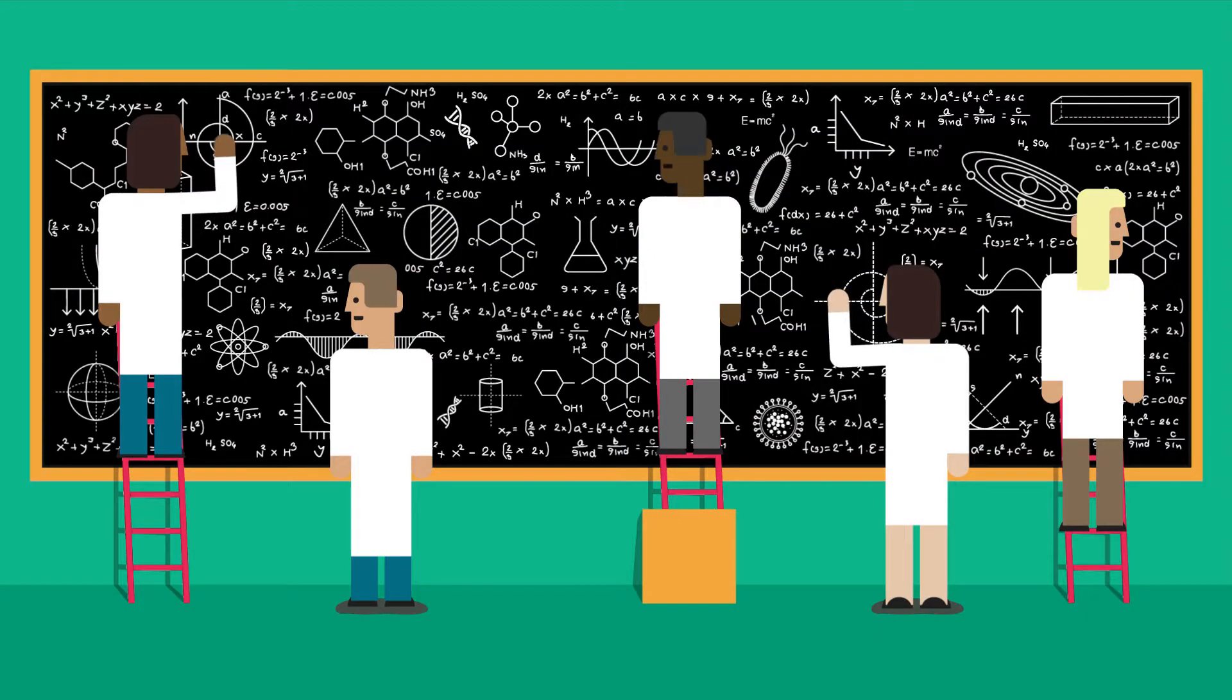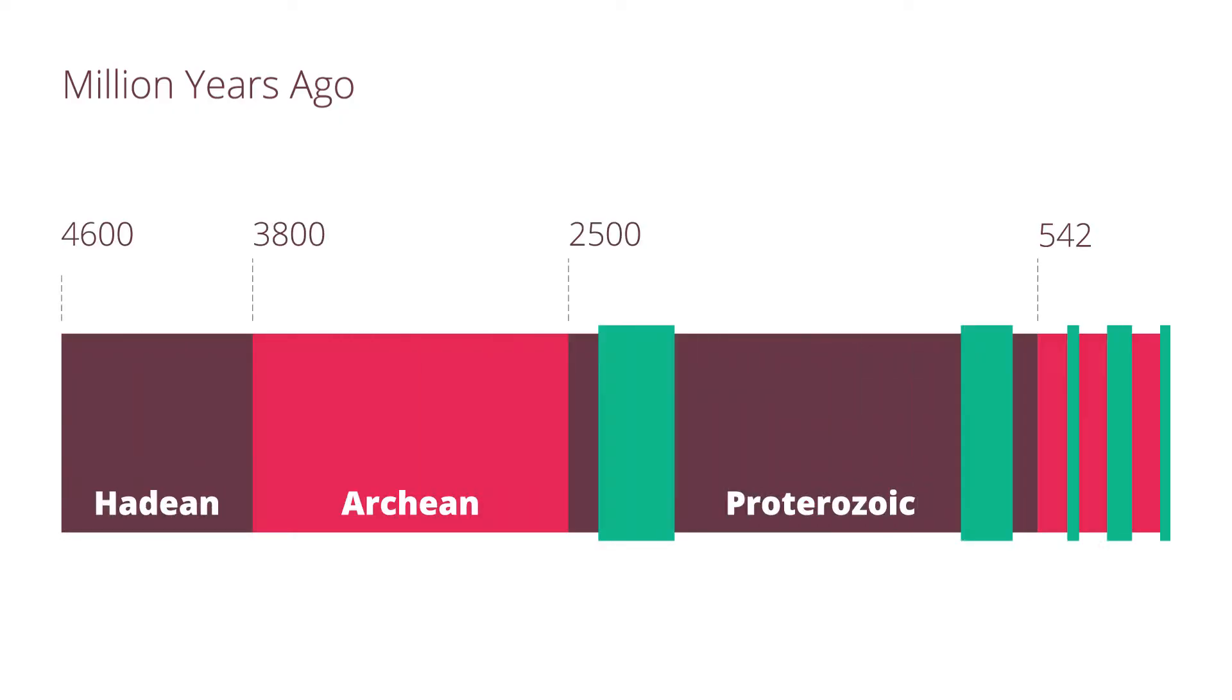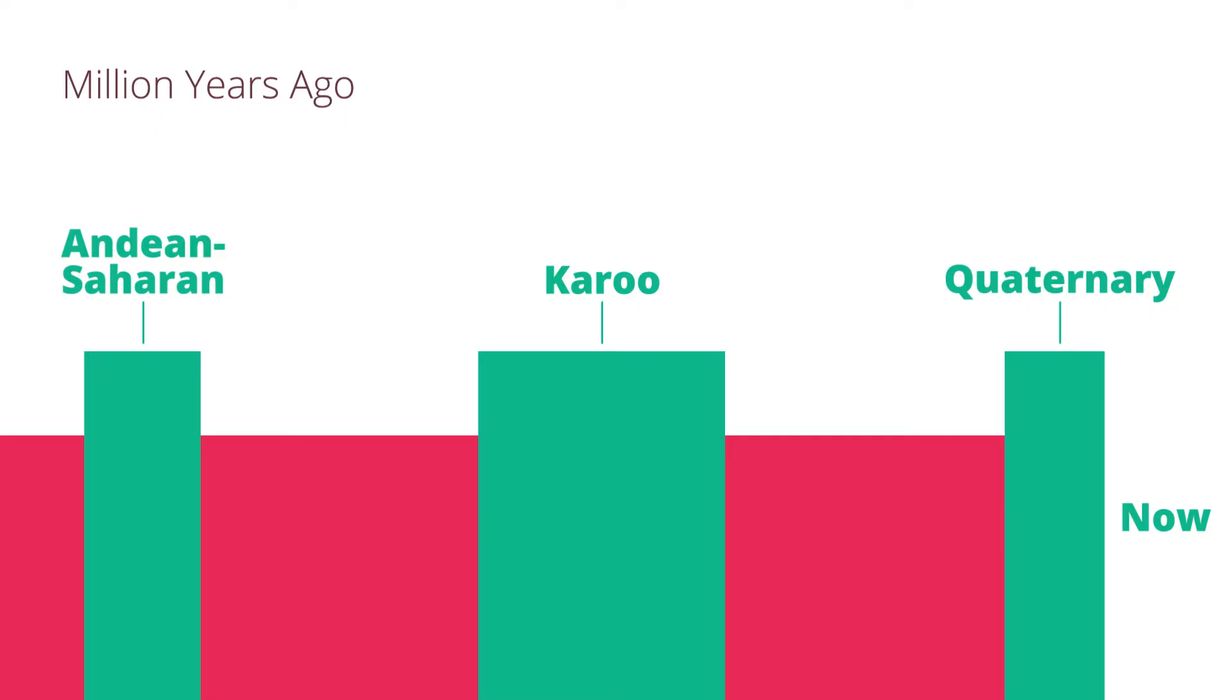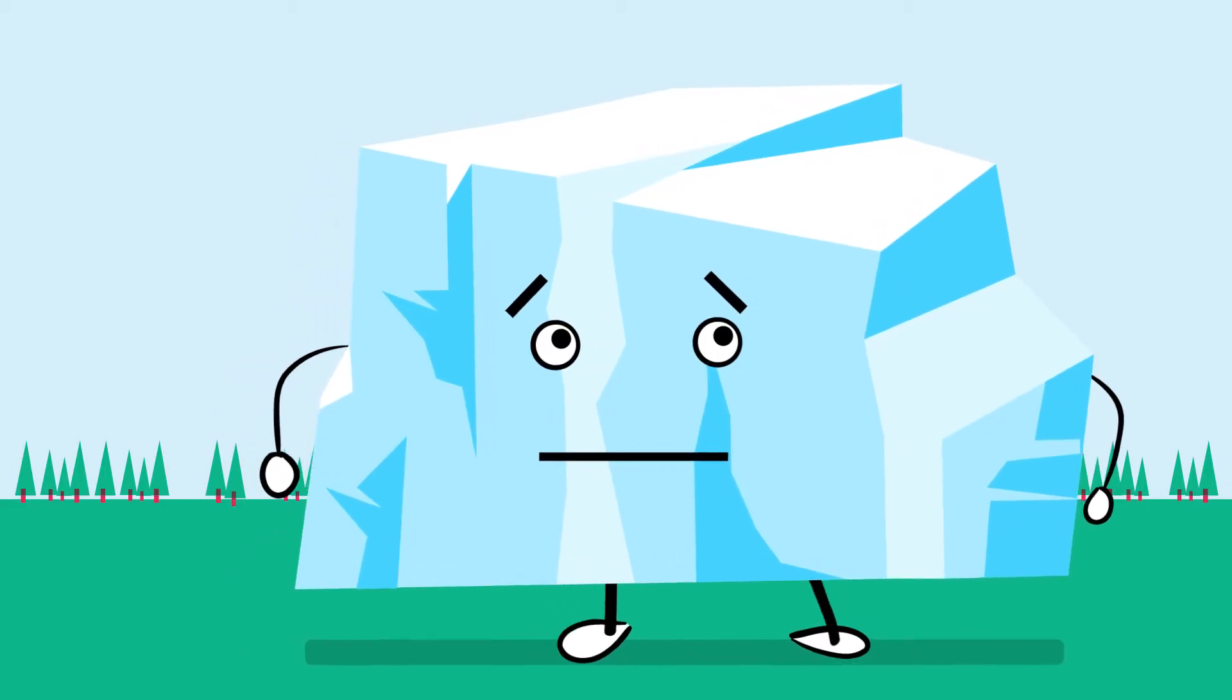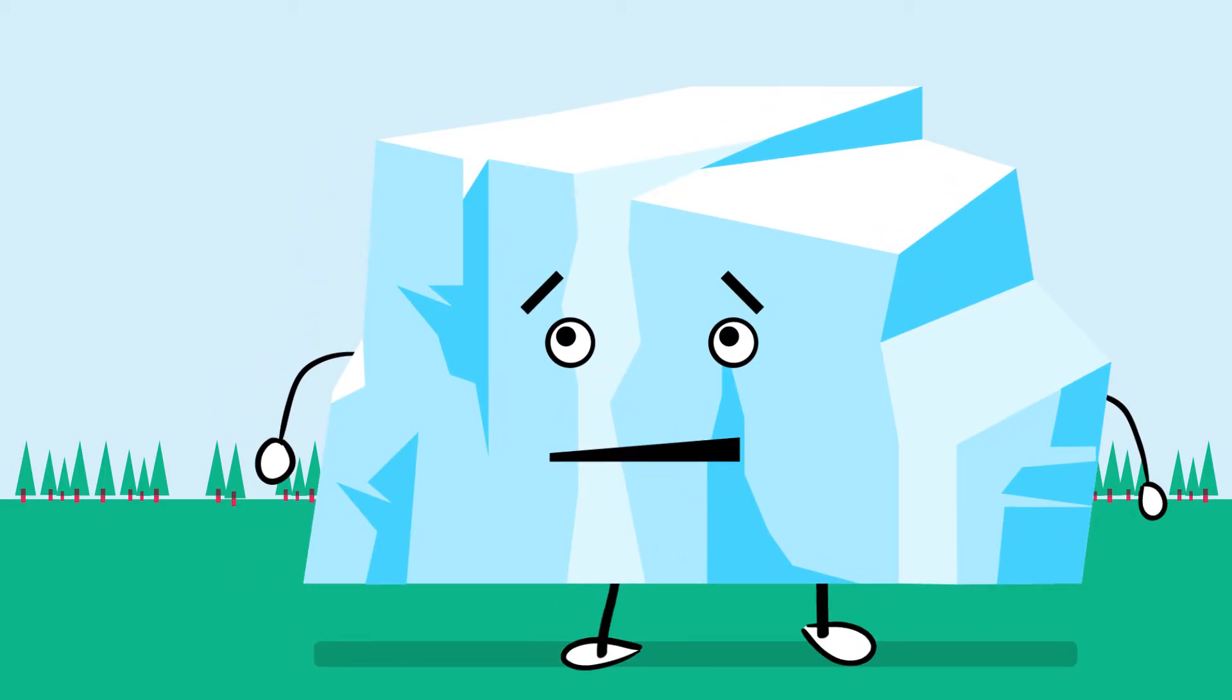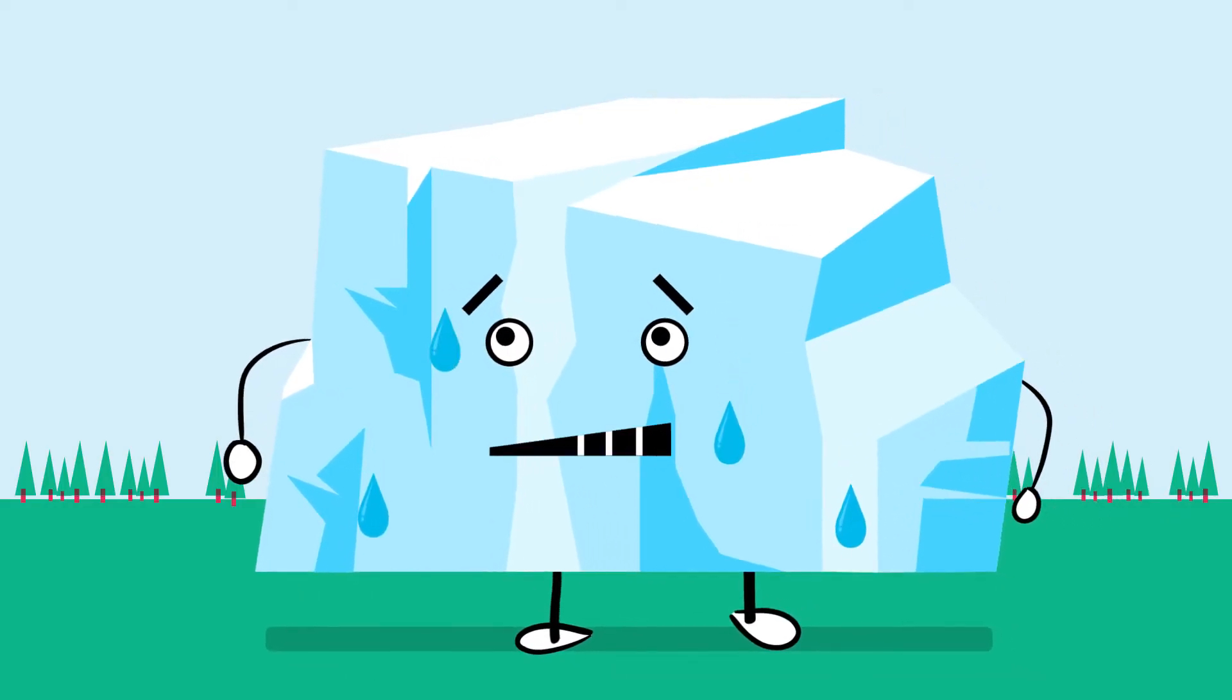Scientists estimate that it has undergone no fewer than five distinct ice ages during that time, and we're officially in one now that started 2.6 million years ago, alternating between glaciers very slowly advancing over 100,000-year glacial periods and very slowly retreating over 10,000 to 15,000-year interglacial periods.